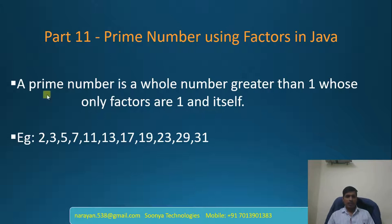What is a prime number? A prime number is a whole number greater than 1 whose only factors are 1 and itself. That means if any number contains only 2 factors, then that number is the prime number. Few examples for prime numbers are 2, 3, 5, 7, 11 and so on.